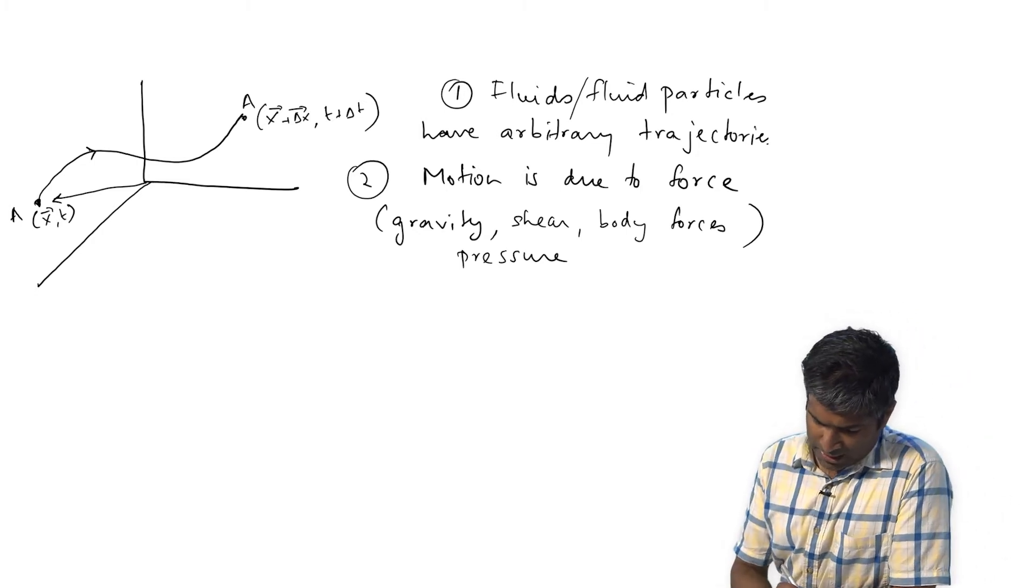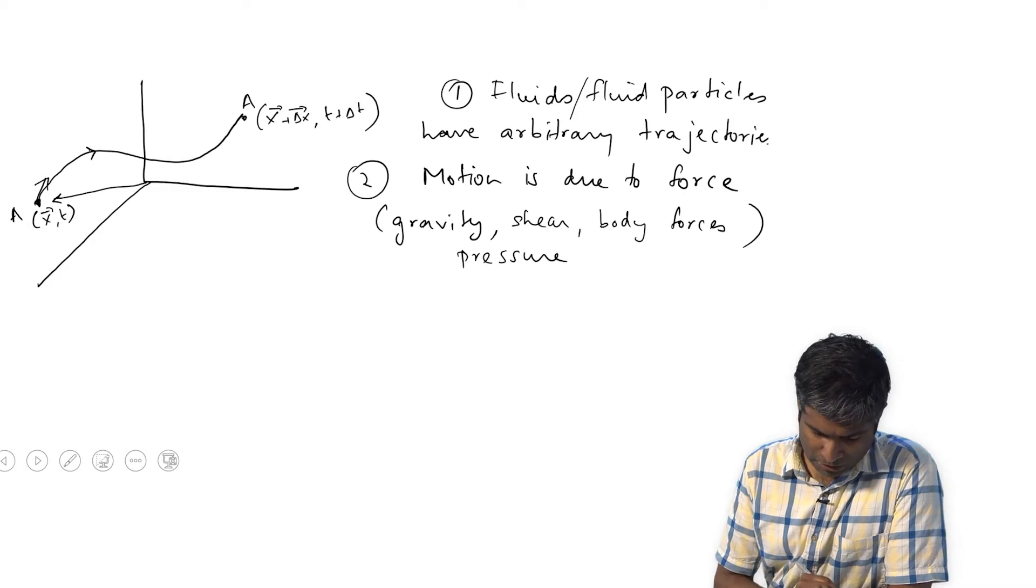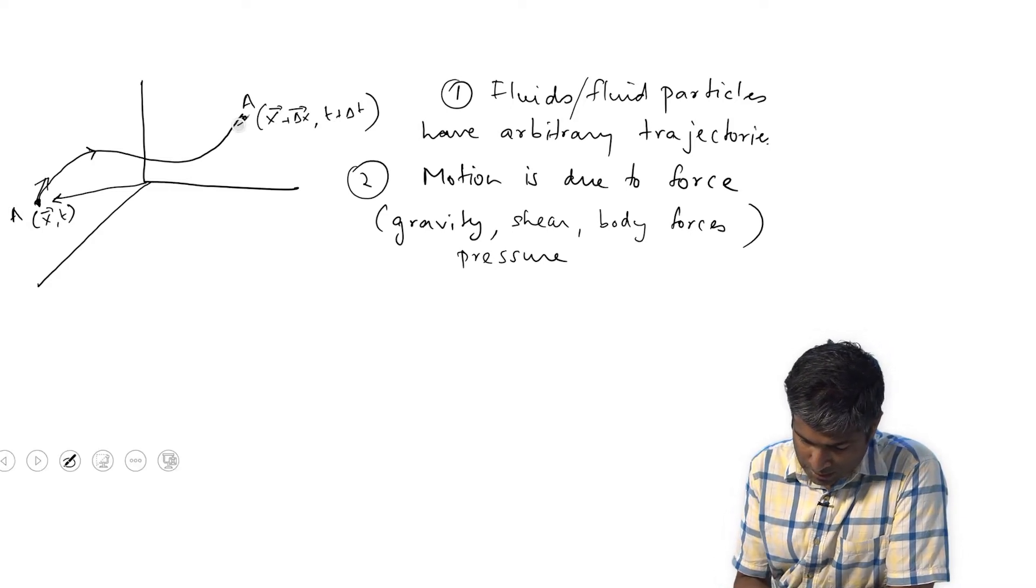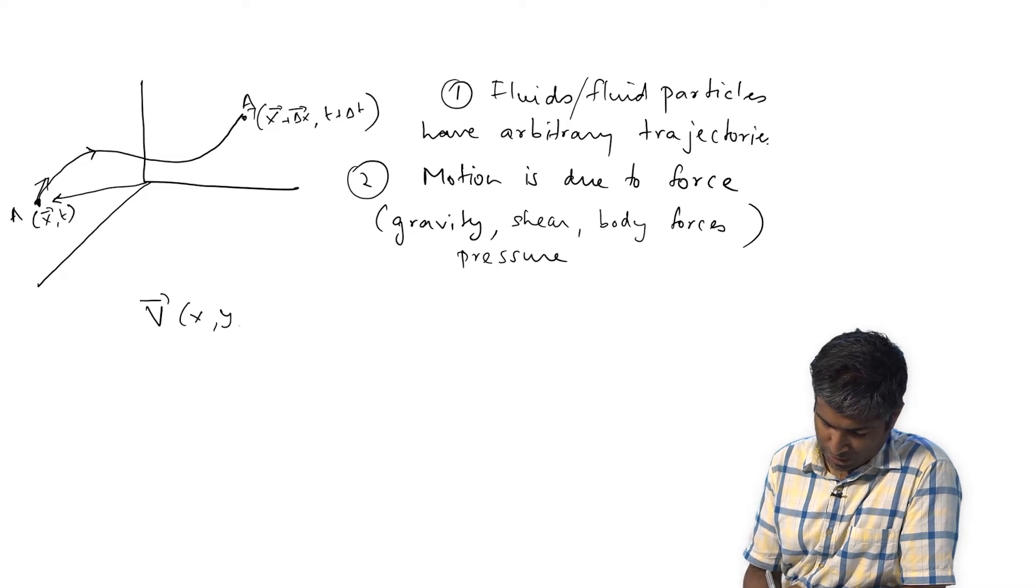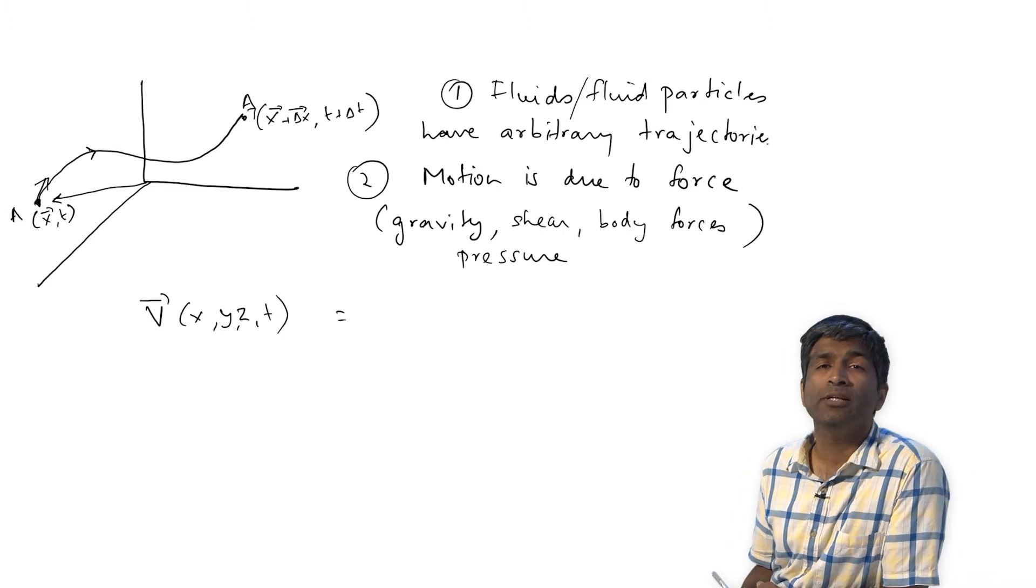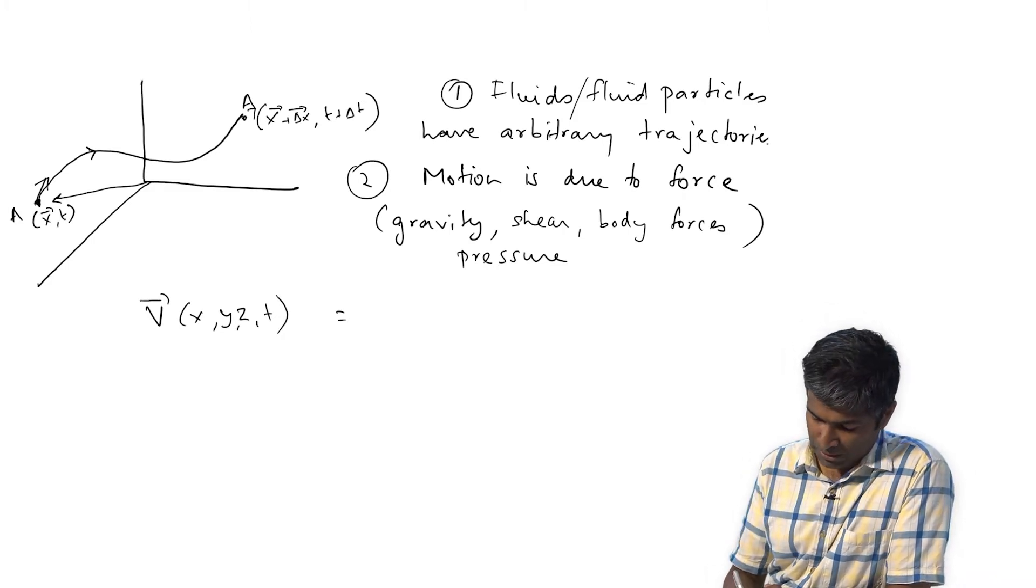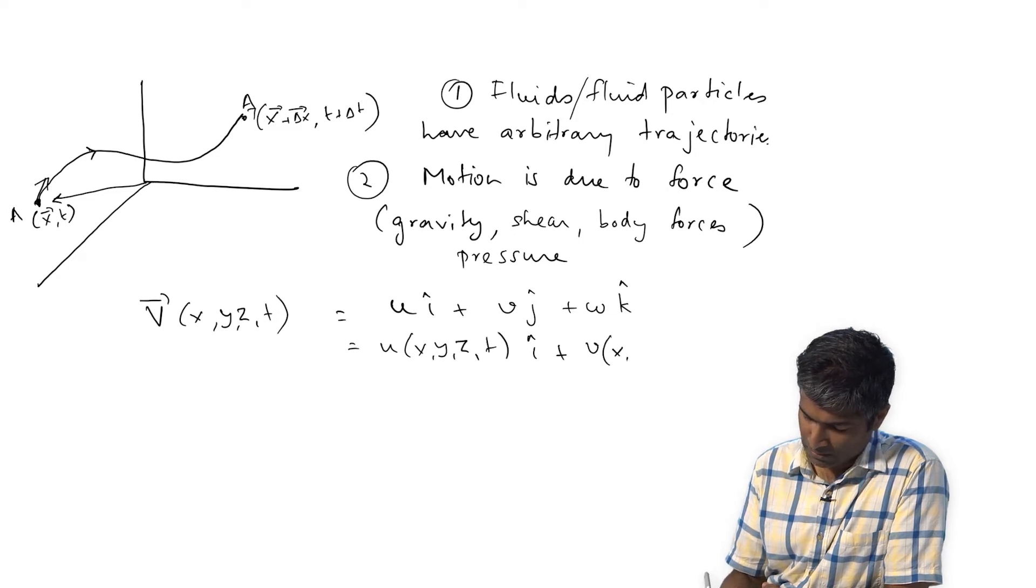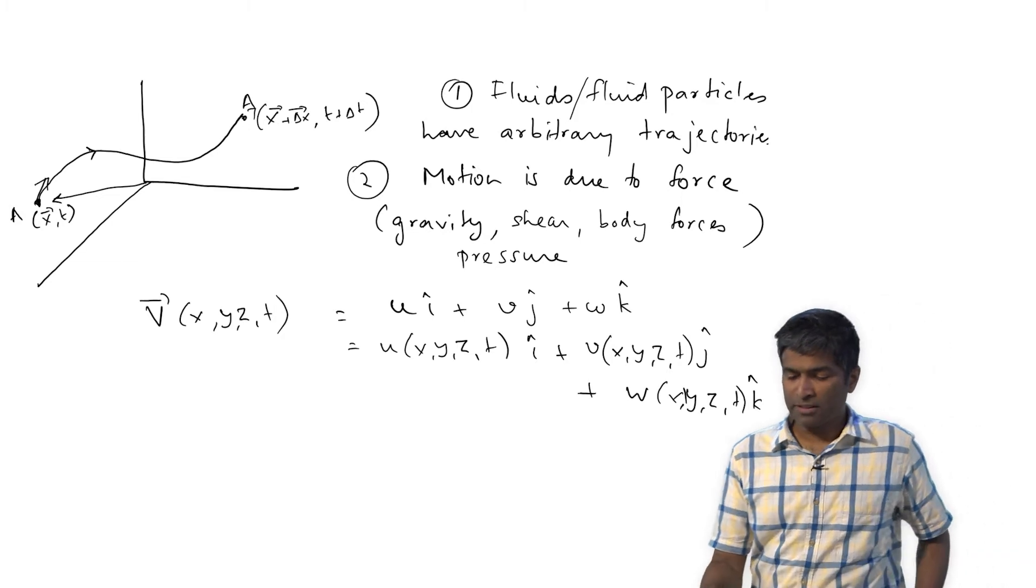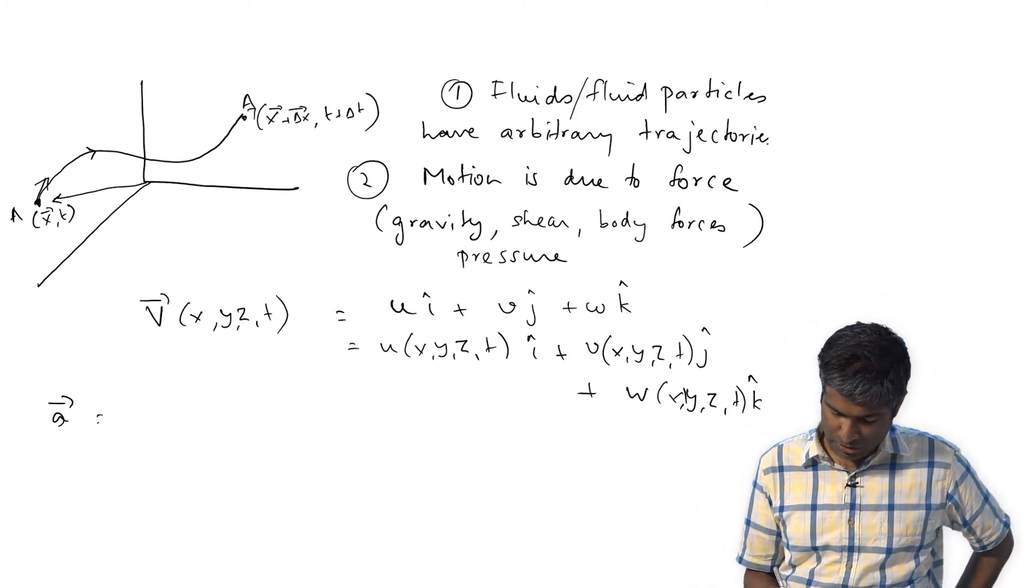The velocity vector here might be pointing in this direction, and the velocity vector at this instant at this position is pointing in a different direction. So in general, if I set my velocity as a function of time and space, if I decomposed it into its three mutually perpendicular components, I would have u*i plus v*j plus w*k, where each of these is really a function of time and space. And if the velocity is a function of time and space, that really means that my acceleration is a function of time and space.